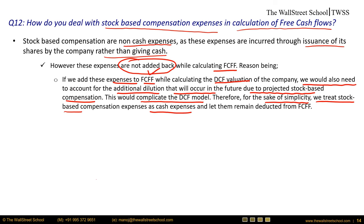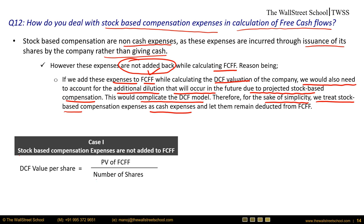Let's do a comparative analysis. Case one: stock-based compensation is not added back to FCFF. The present value of free cash flows is lower because these expenses are deducted, but we also do not add dilution to shares. Both numerator and denominator are on the lower side, and they counter each other, so the net impact on DCF value per share is negligible.